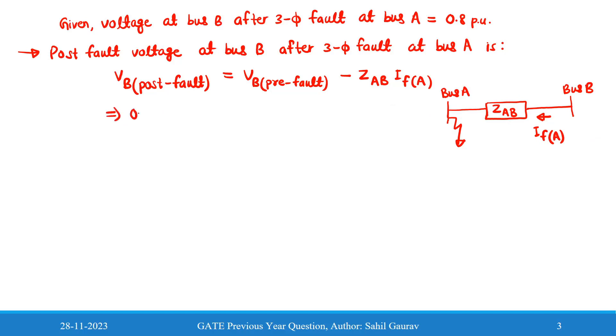So this post-fault voltage at bus B is given as 0.8 per unit and the pre-fault voltage is also given as 1.0 per unit minus Z_AB. We have to find the impedance and the fault current at bus A is given as 10 per unit. So on simplification it will give you Z_AB = 0.02 per unit.